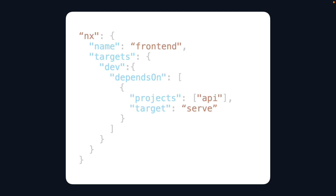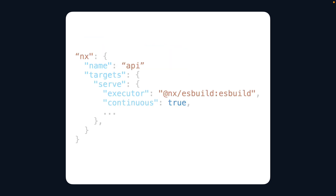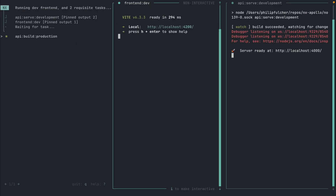It's easy. To use continuous tasks in a task pipeline, you set them up just like any other task pipeline. Let's say we have an application named frontend. It has a dev target and we want it to depend on our backend being served. We add a depends-on with our project of API and our target of serve configured. Whenever our frontend is run with dev, it's going to also spin up the API with serve. If the API project is using inferred tasks, we don't have to do anything else. But if we're using executors, we have a little more configuration to do. We're in the configuration for the API project, looking at its serve target. We just add continuous equal to true — and now this task is marked as continuous and can be used in a task pipeline. If we run dev frontend, we'll see the frontend running its dev target, the API running its serve target, and all logs are nice and neat right next to each other in the new terminal UI.